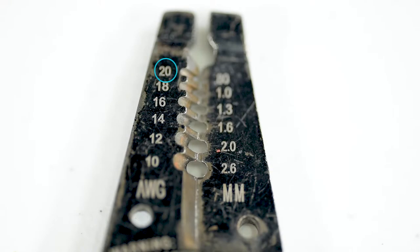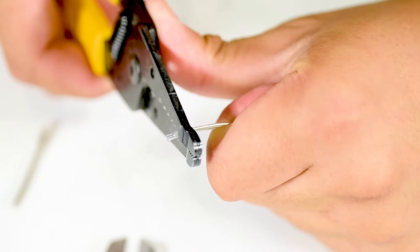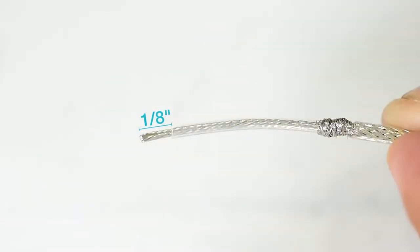Use the 20 gauge hole of the wire stripper to remove 1 eighth inch of the inner insulation wire.